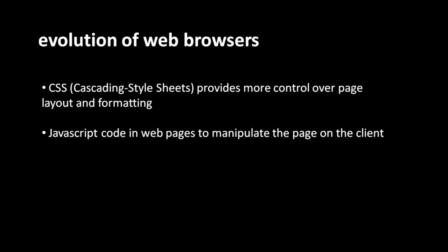CSS, short for Cascading Style Sheets, is a mechanism that allows page authors more control over the layout and formatting of the page — precisely how everything is arranged and how it looks. The second big feature added in the late 90s is JavaScript. Browsers now include a JavaScript interpreter such that you can put JavaScript code in your HTML and the browser will execute that JavaScript code.